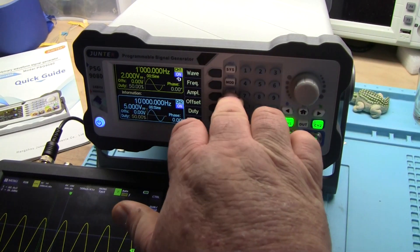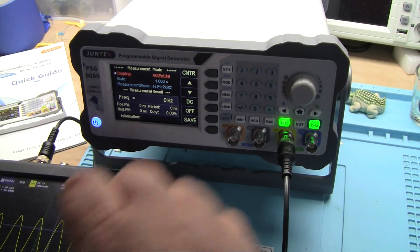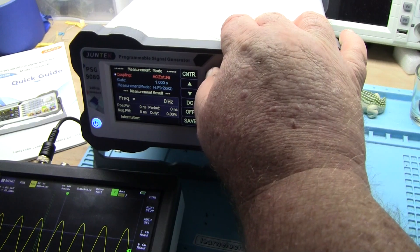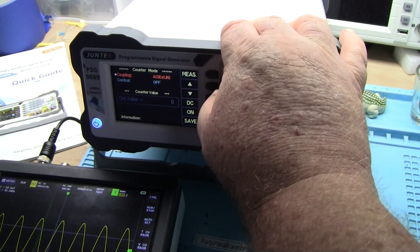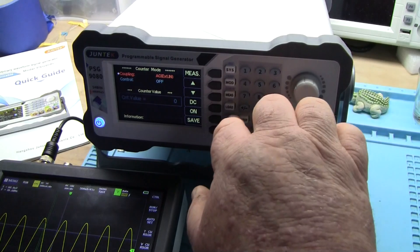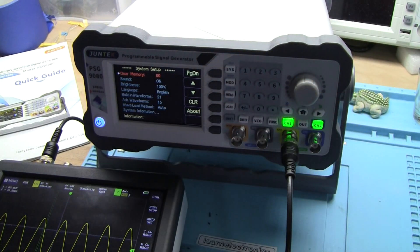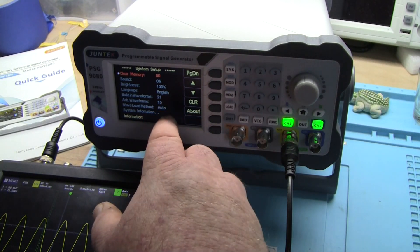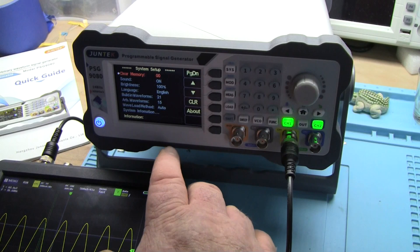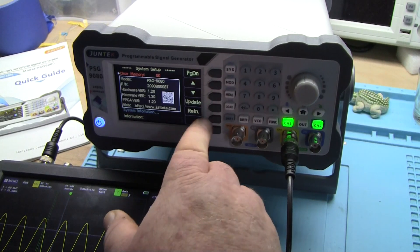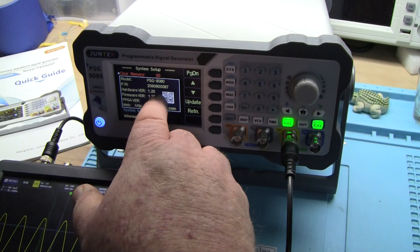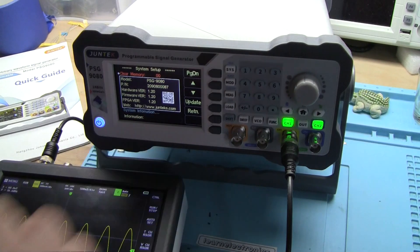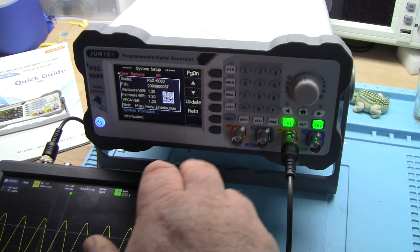One last thing to look at: our measurement functions. We can do a counter or a frequency counter. There's our system menu: brightness, language, 21 built-in waveforms, 15 arbitrary waveforms. This is the PSG 9080, hardware version 1.2, firmware version 1.2, website juntech.com.